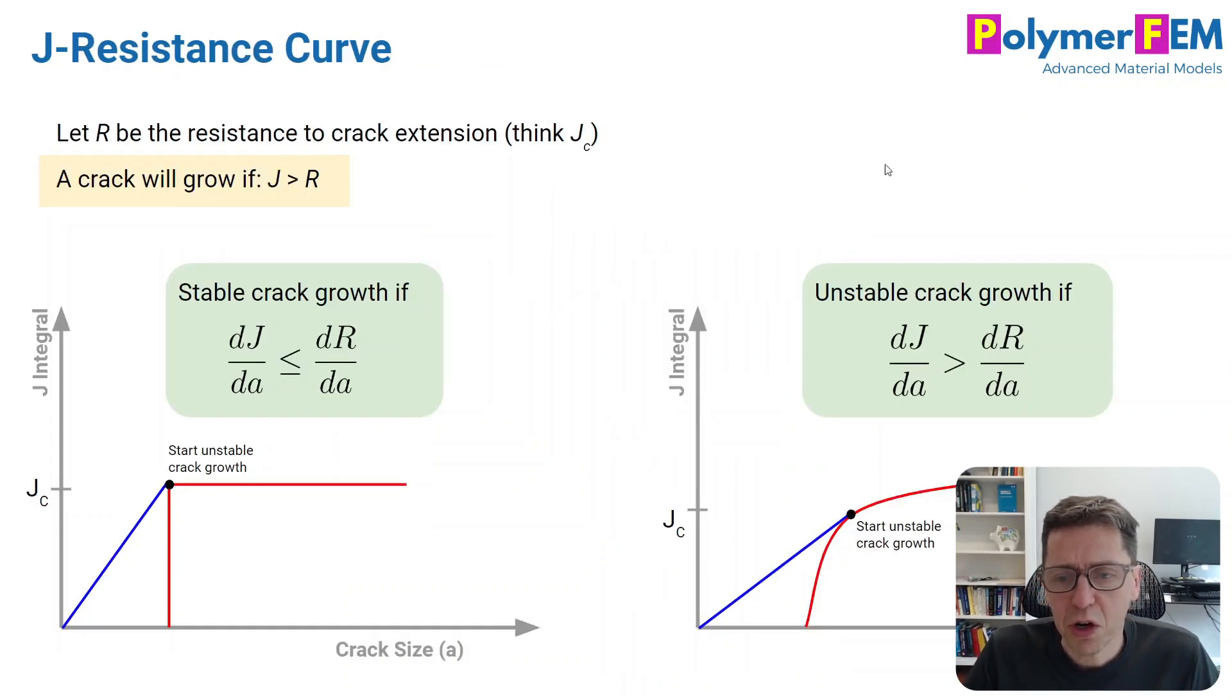Now there's one more concept worth mentioning when it comes to the J-integral, and that's something called the resistance curve. A crack will grow, as we've talked about, if J is larger than some critical value. I'm going to call it R for resistance. But that really doesn't tell you what happens once J reaches that value. Will the crack grow really fast and the whole thing will fail? Or is it stable crack growth at that point? It's easy to explore this a little bit more.